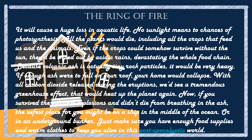With plants wiped out by acid rain, no sunlight, and crushing ash, herbivorous animals would not be able to live without eating plants and would die. Then carnivorous animals would have nothing to eat and would also die. Every single living thing in that post-apocalyptic world would die. With all the carbon dioxide released during eruptions, a tremendous greenhouse effect would heat up the planet. The safest place might be on a ship in the middle of the ocean or in an underground bunker with enough food supplies.